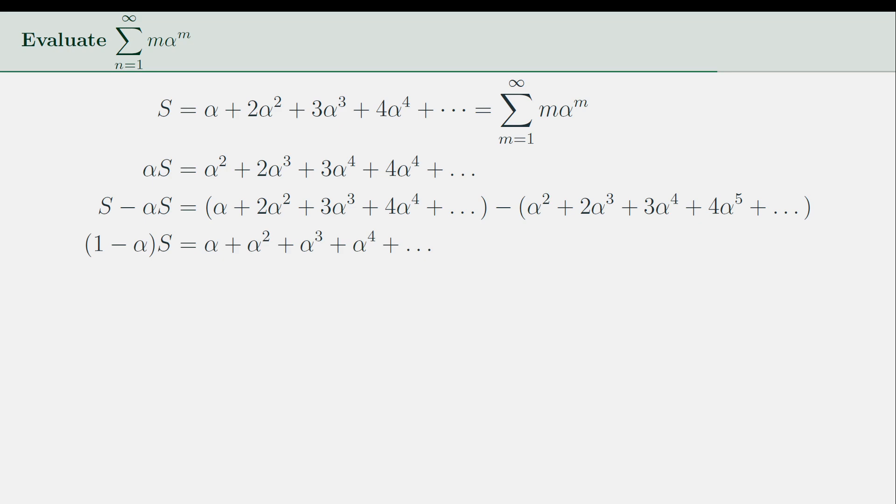The left-hand side of the expression can be factored out as (1-α)S, where the right-hand side reduces to the sum of α plus α² plus α³ and so on. This is true because you can pair up every term in the right-hand side as 2α² minus α², 3α³ minus 2α³, and so on.